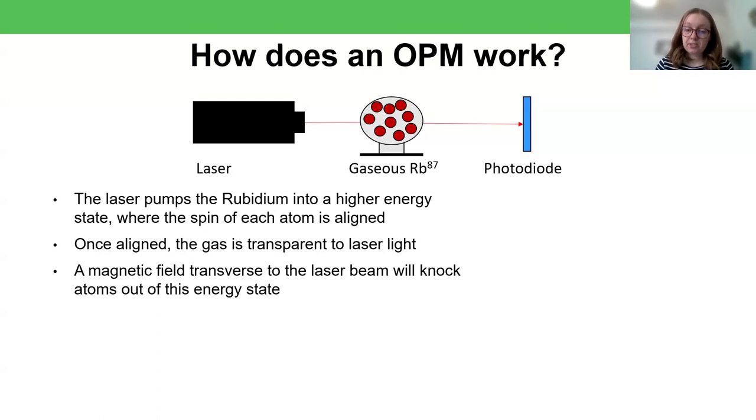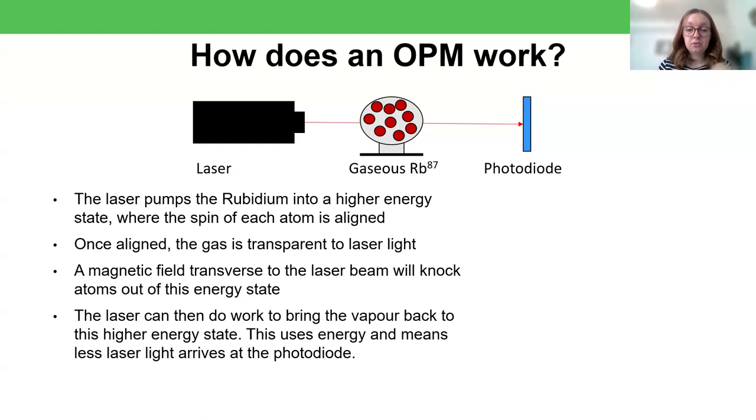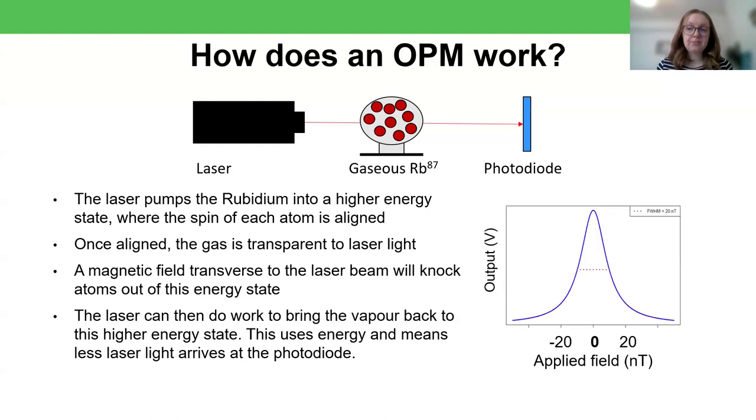Now, a magnetic field transverse to the laser, however, will knock the atoms out of this energy state. It effectively perturbs them. And so suddenly the laser is able to do work, give energy to the gas again, in order to bring them back to this higher energy state. But that's using up energy from the laser, and so less laser light makes it to the photodiode. So what that means, if you look at the photodiode output, this voltage on the y-axis of this graph, is that when you've got zero magnetic field, the maximum amount of light is reaching the photodiode. So you get the maximum voltage output. But when there's a transverse magnetic field, that's what's shown along the x-axis here, as that field increases, you're seeing less light at the photodiode. And so you can infer the magnetic field from the voltage output.